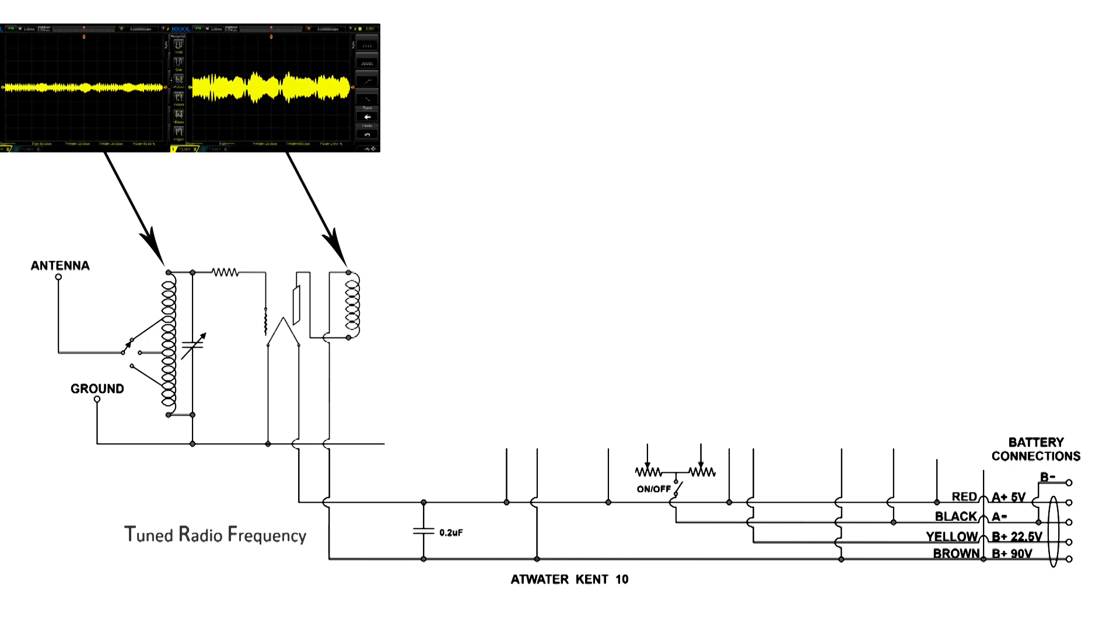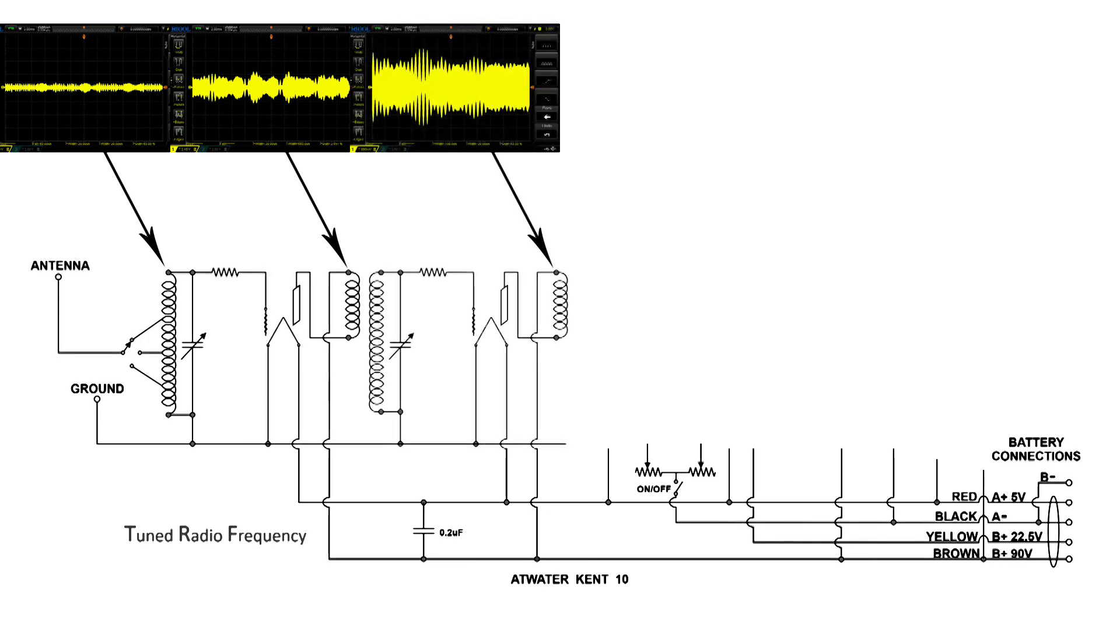And it's sent to the primary of the first RF transformer. It is magnetically coupled. But look at this transformer, it is a step up transformer, so we're getting a little boost there. We have another tank circuit on the secondary, and that gets sent over to the grid of the second tube and amplified.